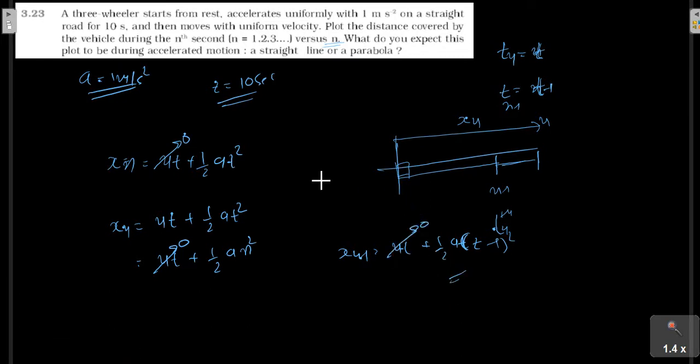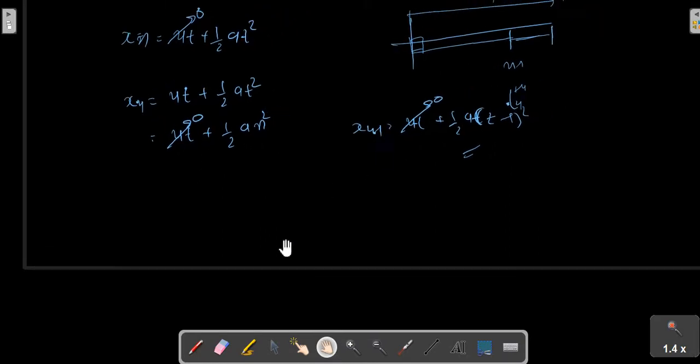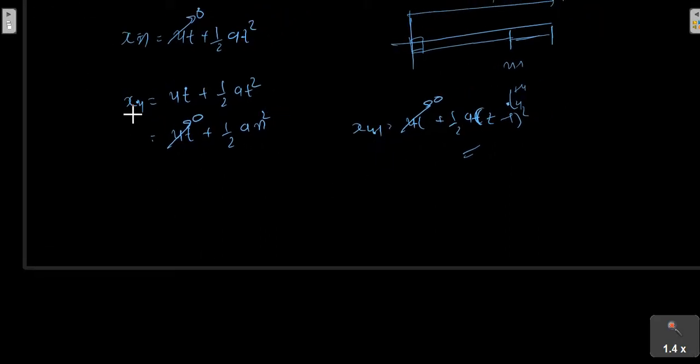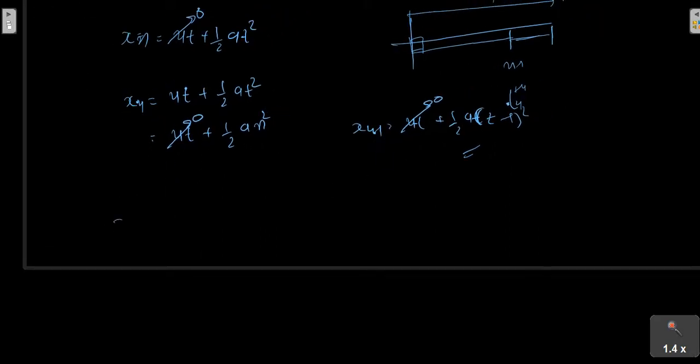After simplifying further, the formula comes: xn minus xn minus 1 equals u plus a by 2 times (2n minus 1).